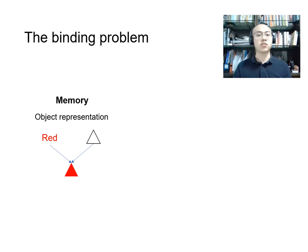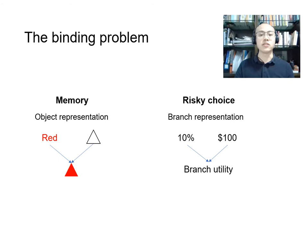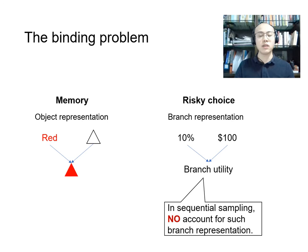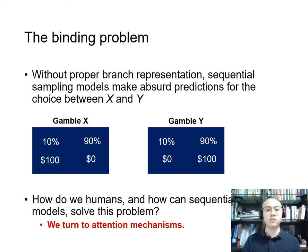This problem is very similar to the classical binding problem in cognitive science. For example, if we want to represent a red triangle in memory, we need first to encode red as a color and triangle as a shape, and also associate the color red and the shape of triangle to form a proper representation of the red triangle. Similarly, for risky choice, we need some form of branch representation for the purpose of calculating branch utilities. In the sequential sampling literature, there is no process-level account for such branch representation.